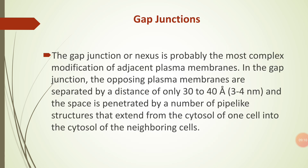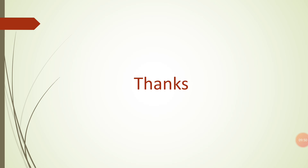The next specialization is the gap junction. The gap junction, or nexus, is probably the most complex modification of adjacent plasma membranes. In the gap junction, the opposing plasma membranes are separated by a distance of only 30 to 40 Ångströms, and the space is penetrated by a number of pipe-like structures that extend from the cytosol of one cell into the cytosol of the neighboring cell. These are all the specializations or modifications of the cell membrane.